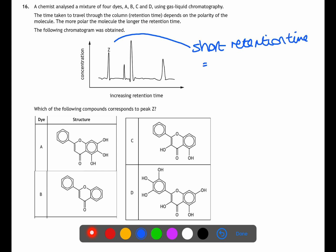Therefore Z, which has the shortest retention time, must be a non-polar or less polar molecule than the others. If we have a look at the structures we're looking for something which is non-polar. A contains OH groups which are polar. C contains OH groups as does D whereas B does not.